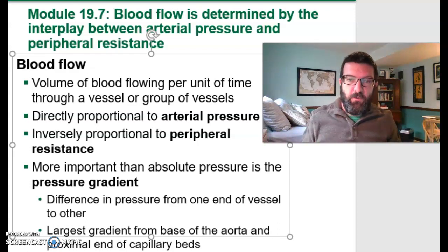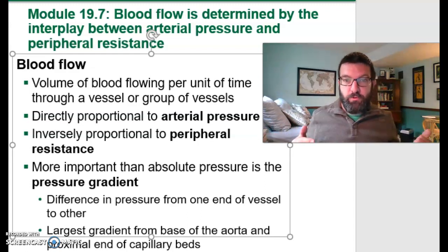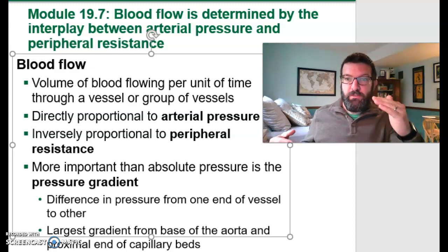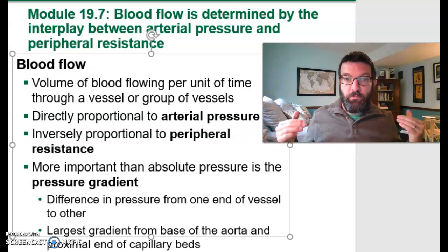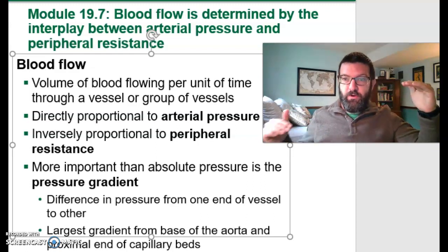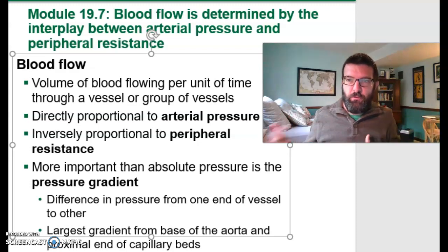From the last video, we know that flow of blood is proportional to the amount of pressure you have in your arteries, and inversely proportional to the amount of peripheral resistance — pressure speeds it up, resistance slows it down. You want a pressure gradient, because blood flows from an area of high pressure to an area of low pressure, just like anything else.